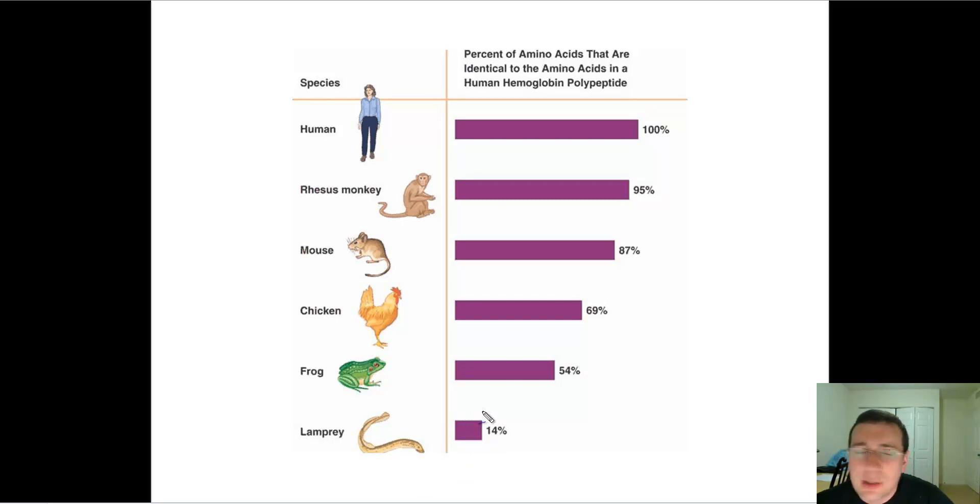But we probably are closely related to the rhesus monkey than we are to rats or mouses because our DNA or protein sequences are more similar to the rhesus monkeys than to the mouse. So you can actually use this as a way to create associations between animals and track the taxonomy or the timeline or the split of the tree of life.